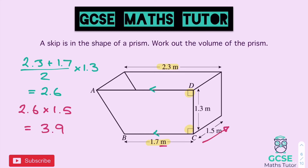In this case — and I hope you spotted it — our units are in metres, not centimetres. So the volume is 3.9 metres cubed. Do watch out for that, because many questions come in centimetres but occasionally a different unit appears. Always make sure you check. There's our final answer: 3.9 metres cubed for the volume of a prism with a trapezium cross section.